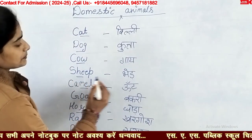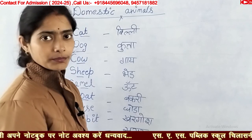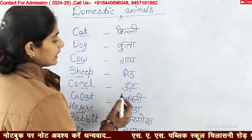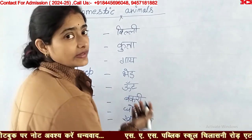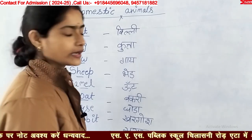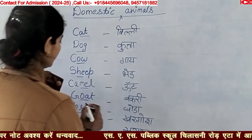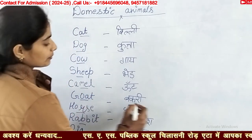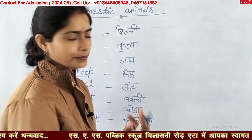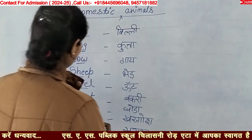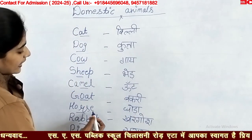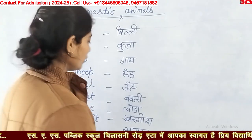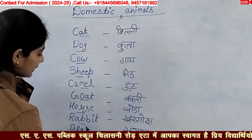Sheep means bher. Camel means oot. Goat — G-O-A-T — goat means bakri. Bakriyon ko bhi hum apne kaam mein paalte hain. Horse — H-O-R-S-E — horse means ghoda. Isko bhi hum paalte hain apne kaam mein.